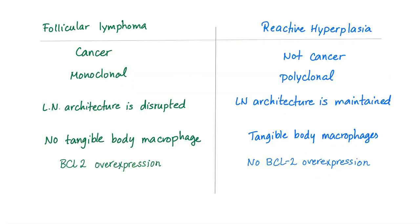A very important comparison is between follicular lymphoma and reactive hyperplasia. Follicular lymphoma is cancer; reactive hyperplasia is not. Follicular lymphoma is monoclonal; reactive hyperplasia is polyclonal. In follicular lymphoma, the lymph node architecture is completely erased or disrupted; in reactive hyperplasia, it is maintained. Follicular lymphoma has no tangible body macrophages, whereas reactive hyperplasia does. Follicular lymphoma has BCL2 overexpression due to translocation between chromosomes 14 and 18; reactive hyperplasia does not.